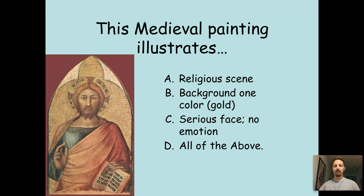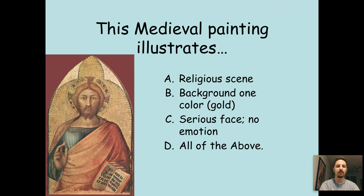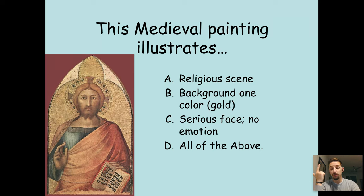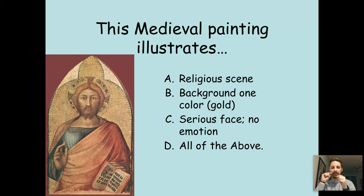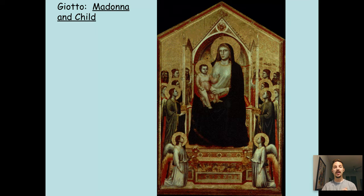I'll give you an opportunity on EdPuzzle to answer this question really quick. This medieval painting of Jesus illustrates: A) a religious scene, B) background being one or two colors, C) a serious face with no emotion, or D) all of the above. It's D — all of the above. Make sure you answer it right. You'll pause and answer this question. Welcome back.